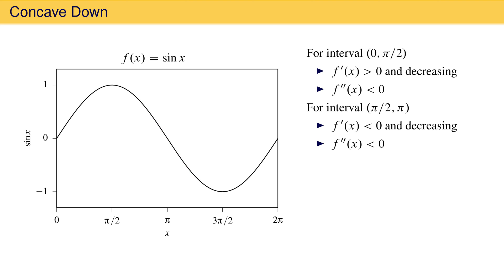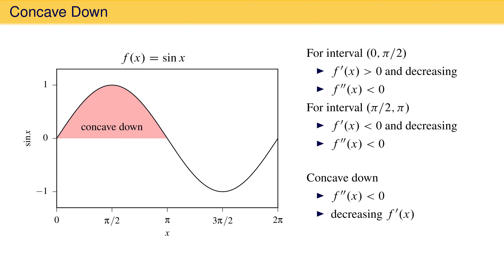For the entire interval from 0 to pi, the second derivative is negative. Functions are referred to as concave down on an interval if the second derivative is negative on that interval. The function sine x is therefore concave down from 0 to pi. A negative second derivative means that the first derivative is decreasing on the interval, and so this is an equivalent way to identify a function as concave down.